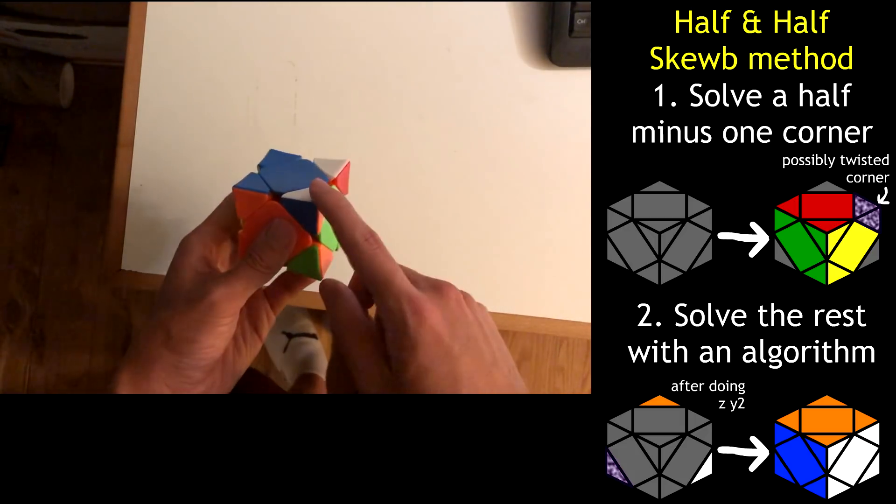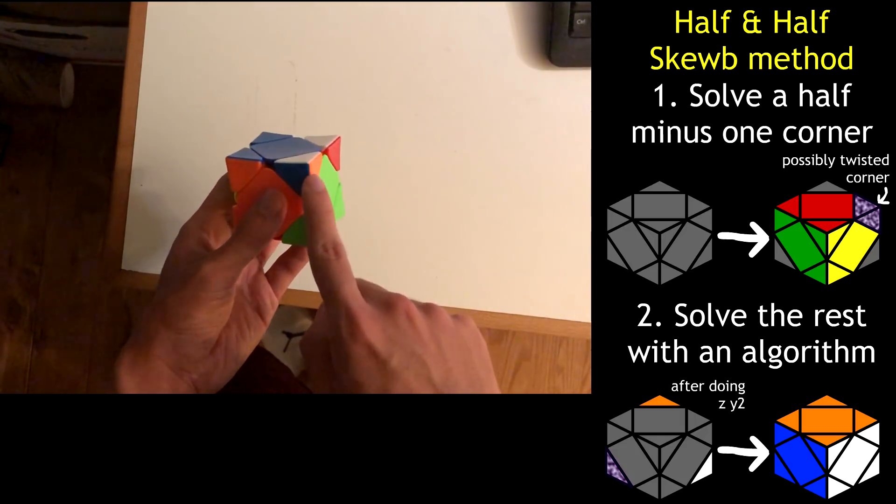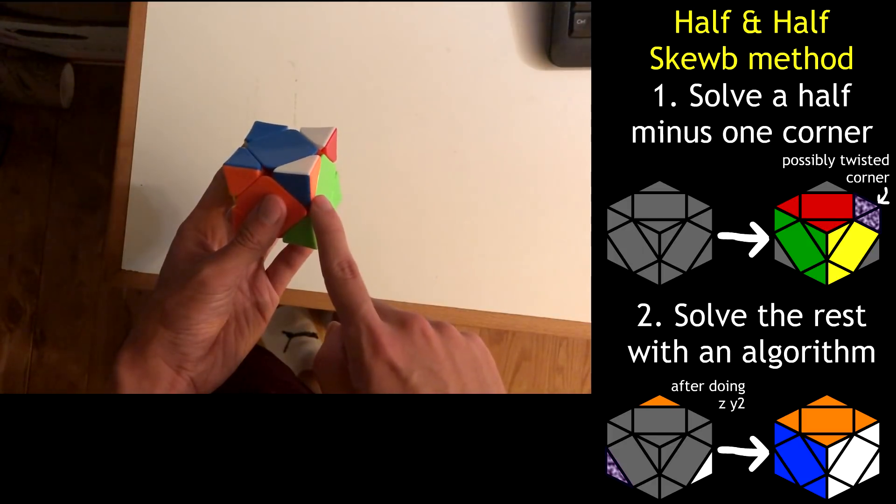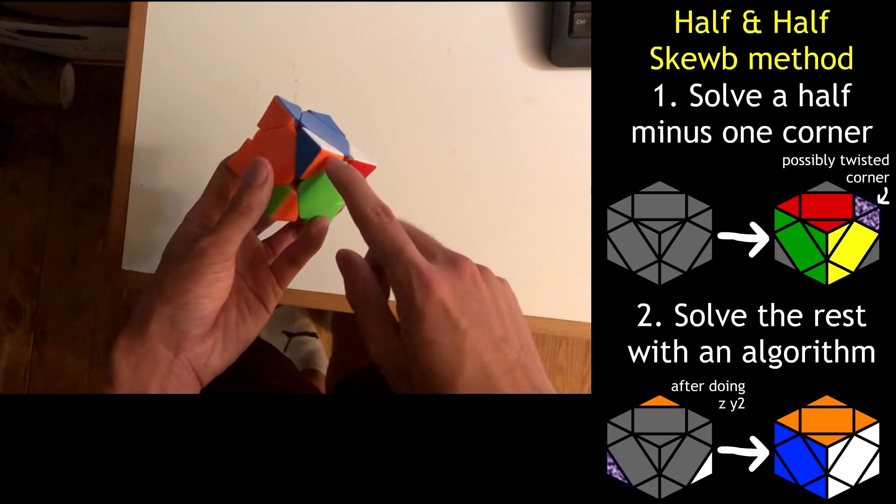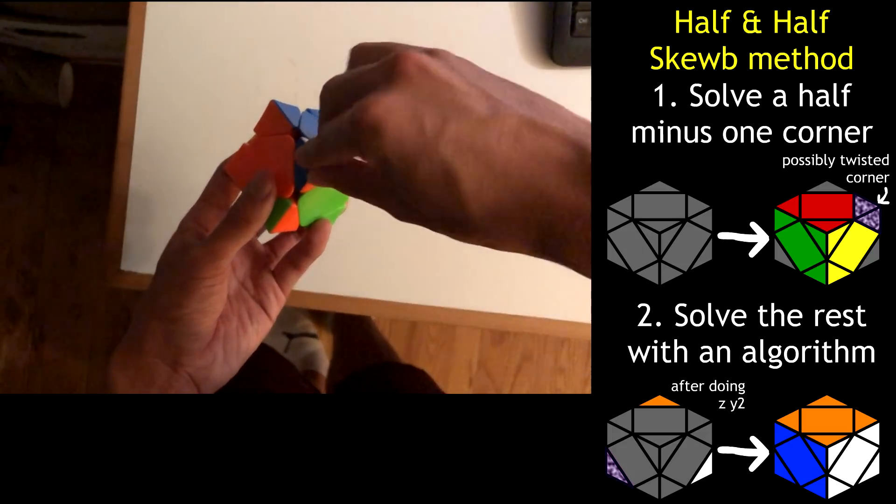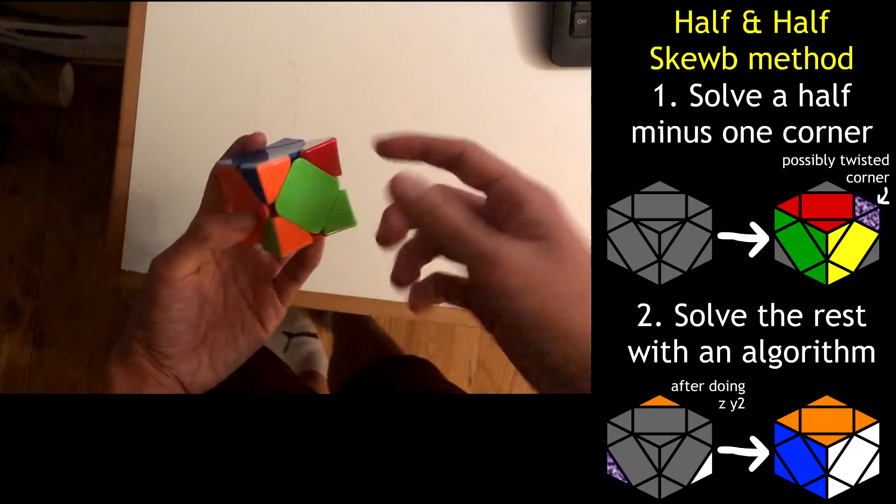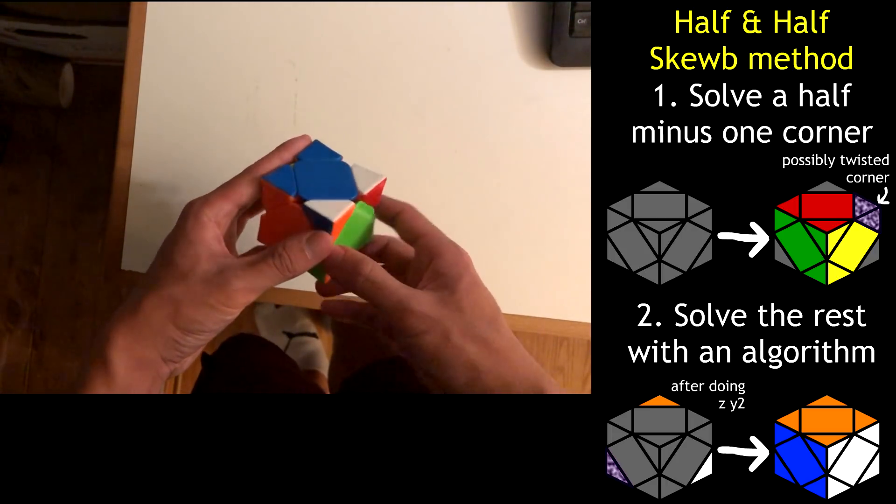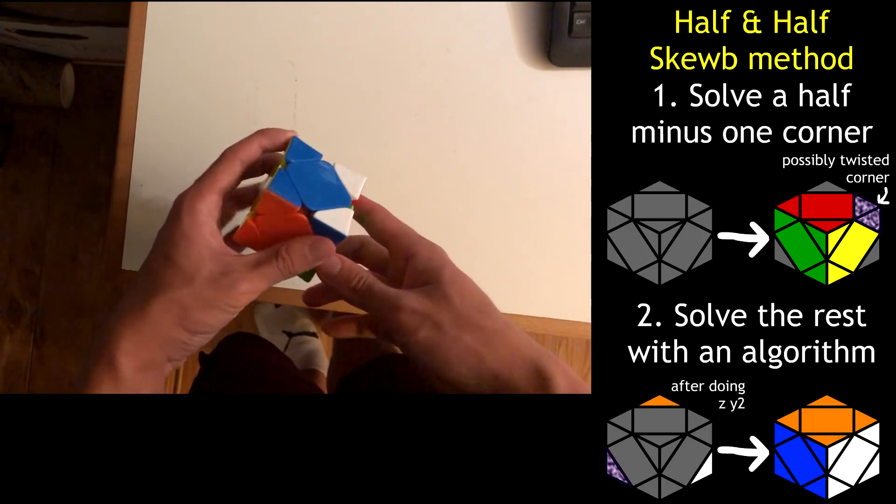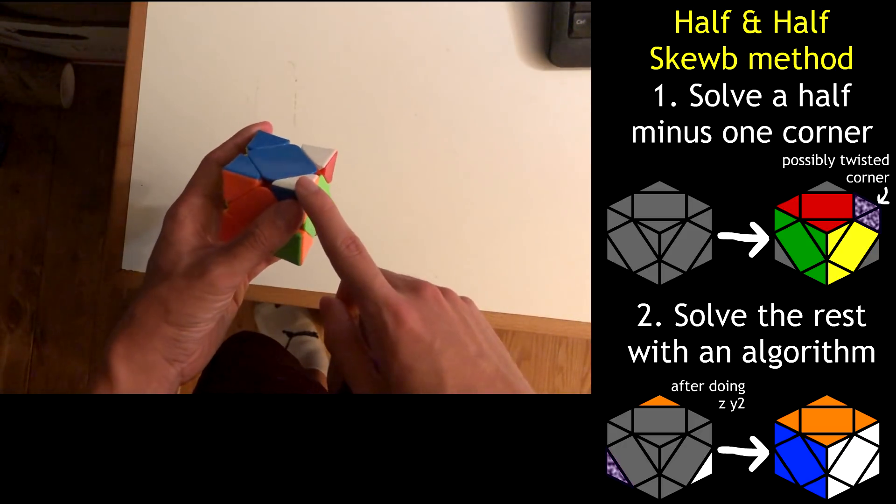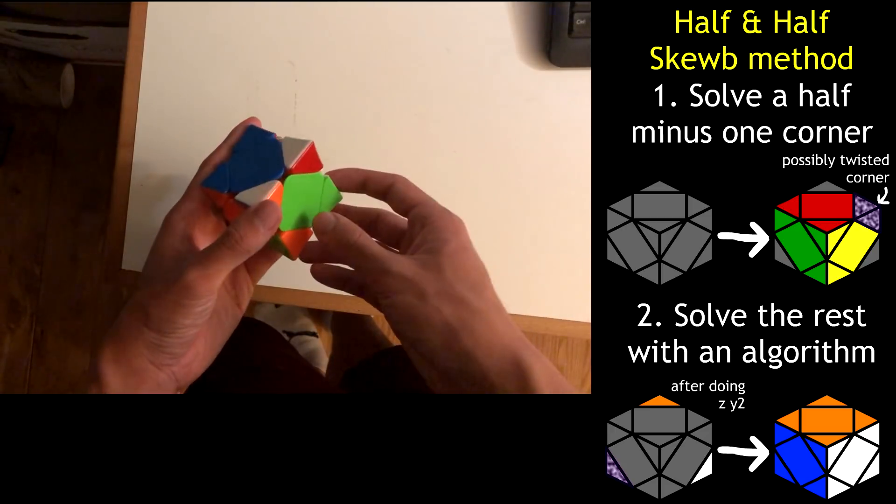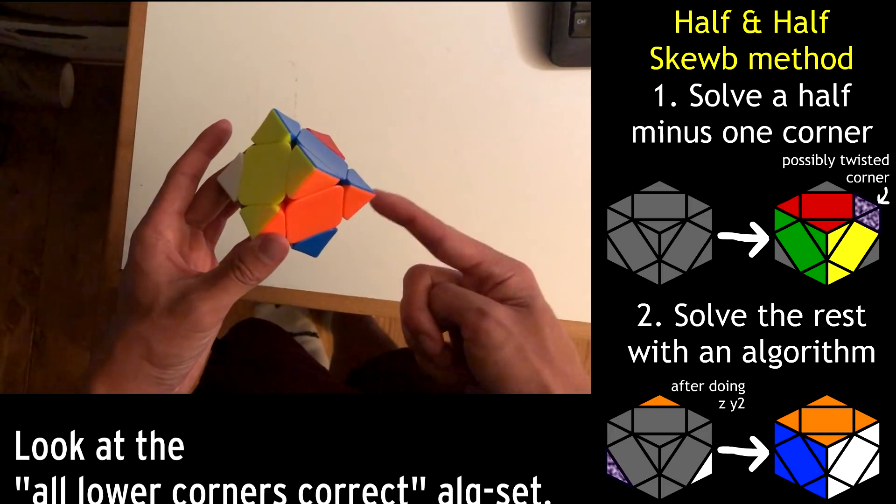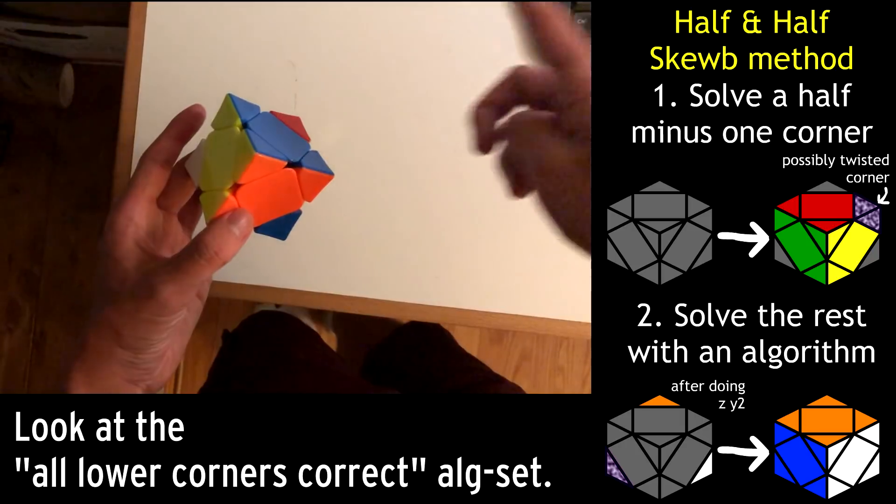So actually, when you solve your half minus a corner, even without paying attention, you will solve this corner's position correctly, but perhaps with the wrong orientation. And you can in fact see that this corner is in the right spot, and if you were just to twist it like this way, it would be solved. What that means is, there's actually only three possible states for how the last corner could end up. Because it's always in the correct position, there's only three possible orientations. There's it being solved, like this,